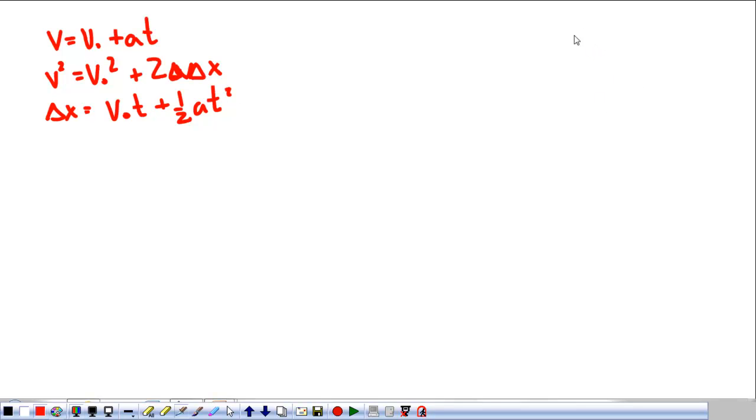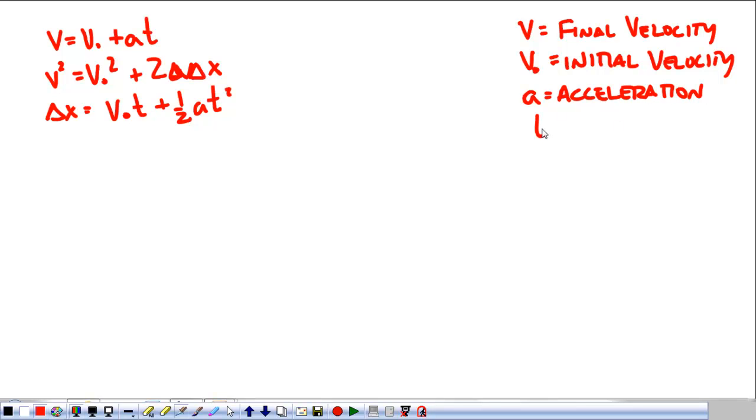Looking at these, I just want to make sure we're all on the same page with what everything is. v is final velocity. v₀ is initial velocity. Acceleration is a. t is for time, the time that passes in the whole thing.